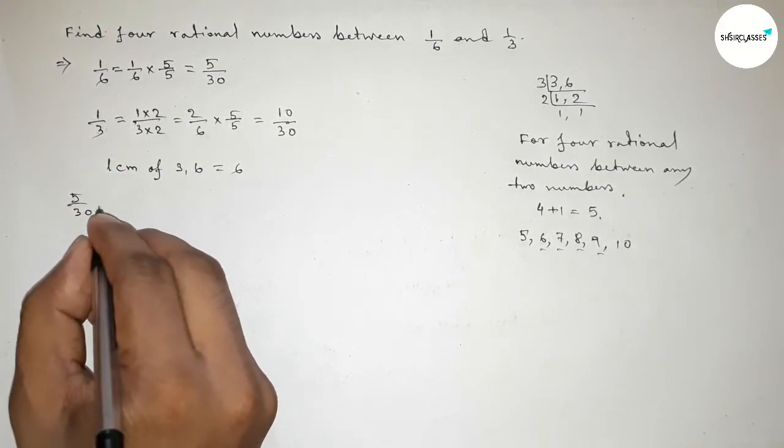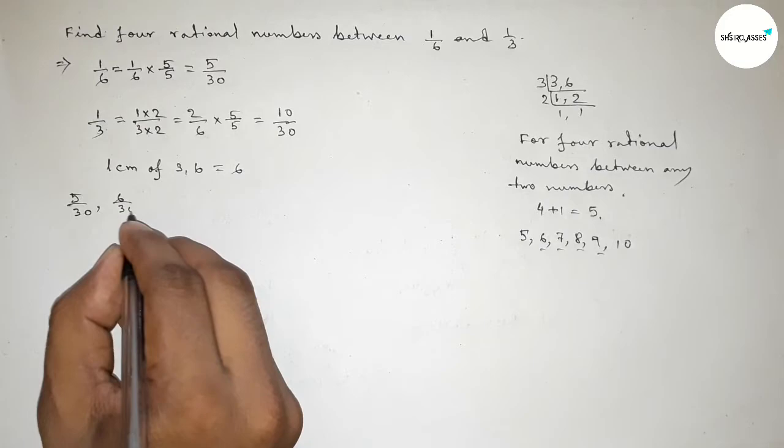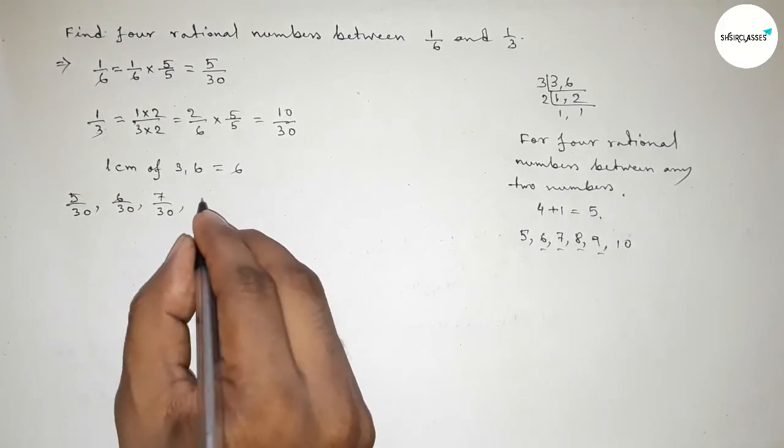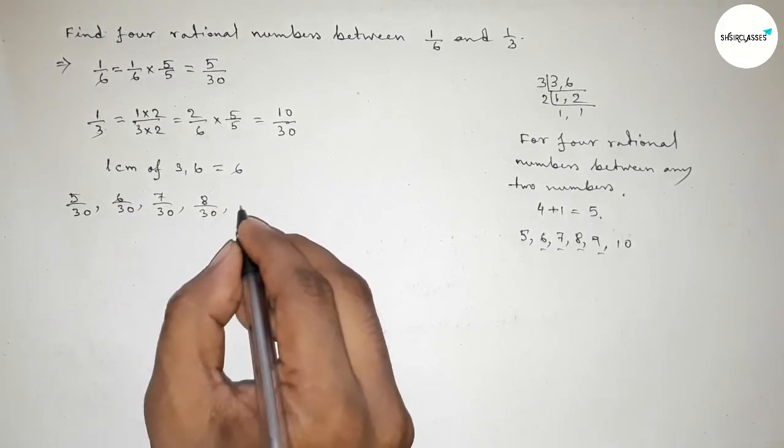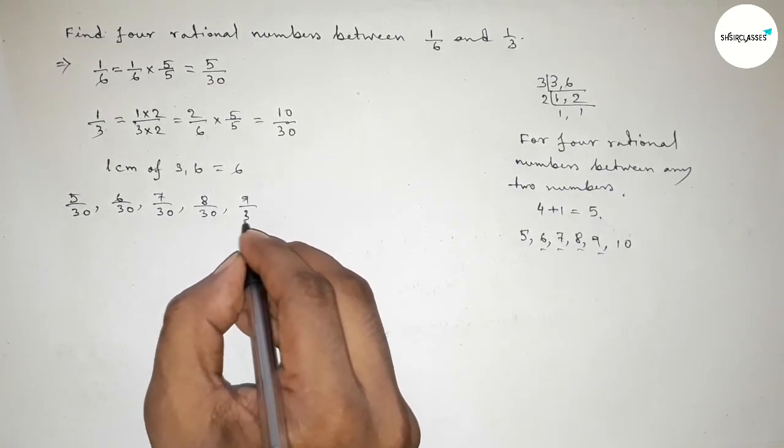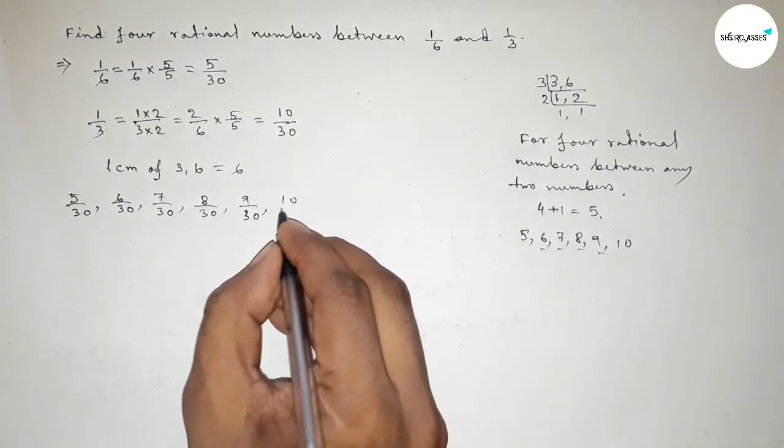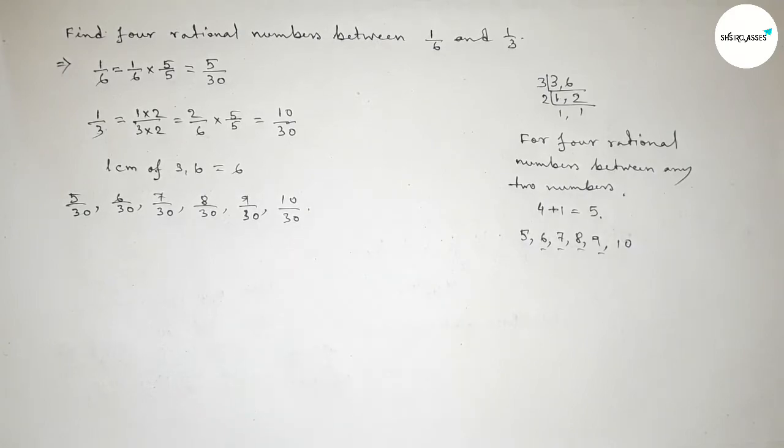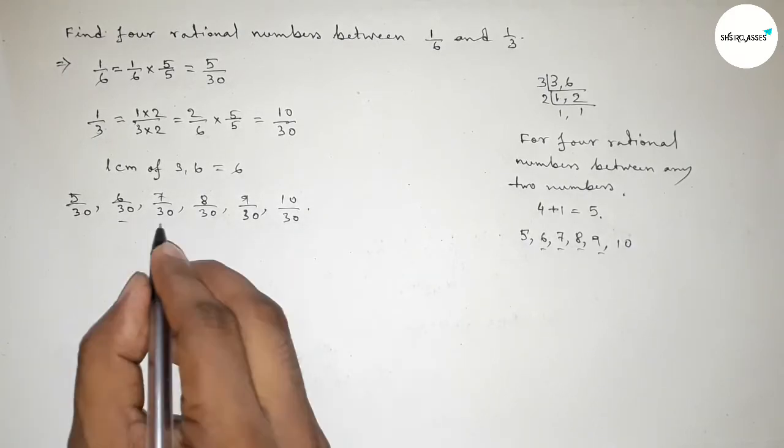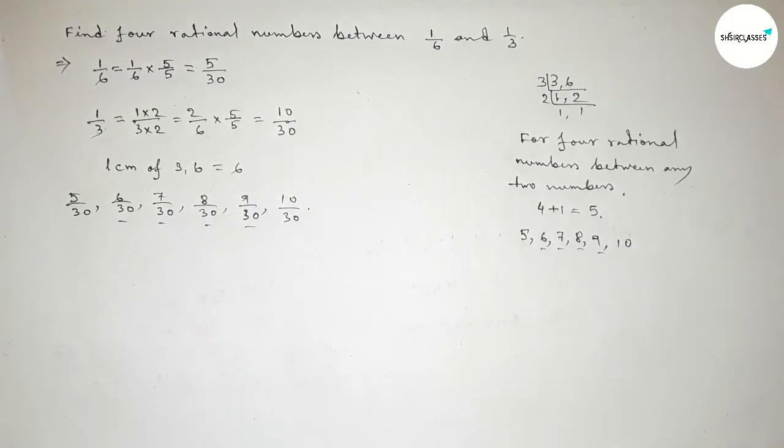Now write down all the natural numbers: first one 5 over 30, 6 over 30, 7 over 30, 8 over 30, 9 over 30, and last one 10 over 30. And among these, these are the four required rational numbers between 1 over 6 and 1 over 3.